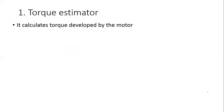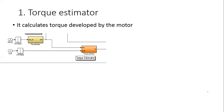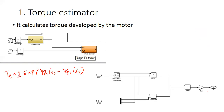The torque estimator calculates the torque developed by the motor. The expression for torque is: T = 1.5 × (P/2) × (Ψds·Iqs − Ψqs·Ids). All this information is provided and the same mathematical equation is implemented in the block, allowing us to estimate the torque.